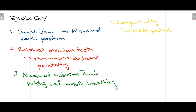The second cause is retained deciduous teeth. For example, if molars are ankylosed and retained, the permanent tooth erupting from below is deflected and can erupt either buccally or palatally, changing the relation of the molars or incisors and tending to lead to crossbite.